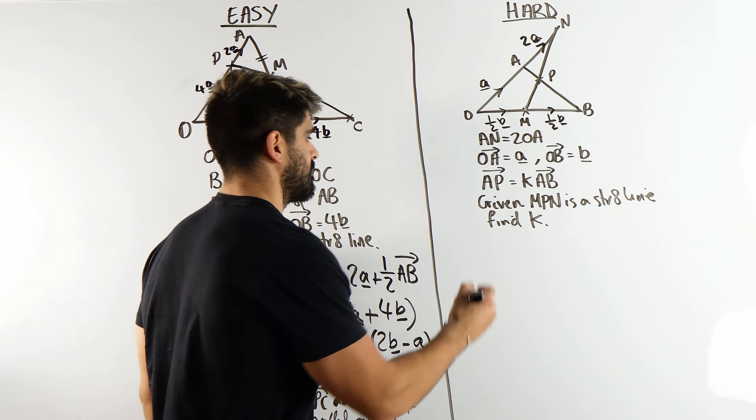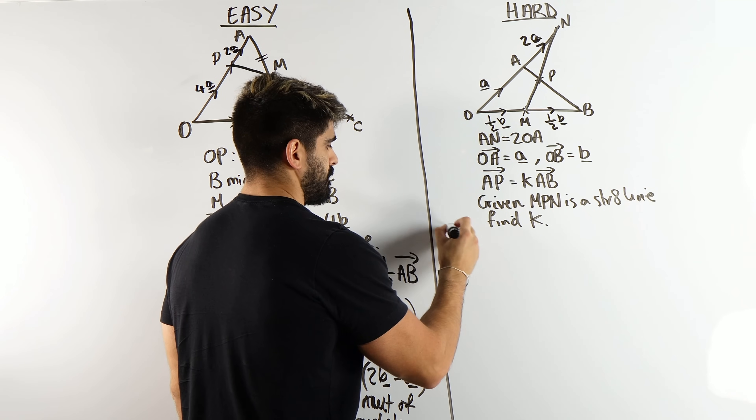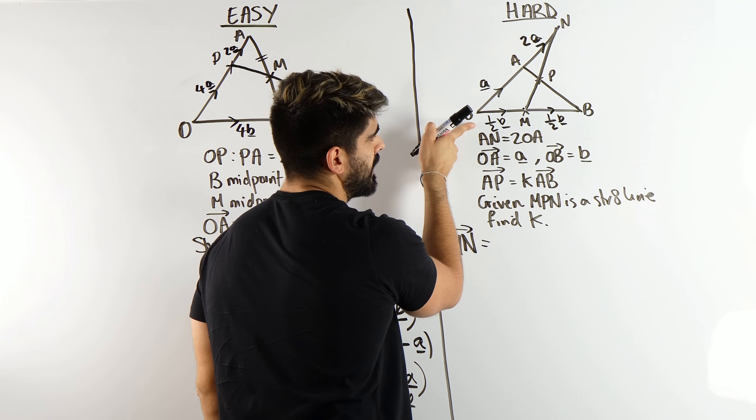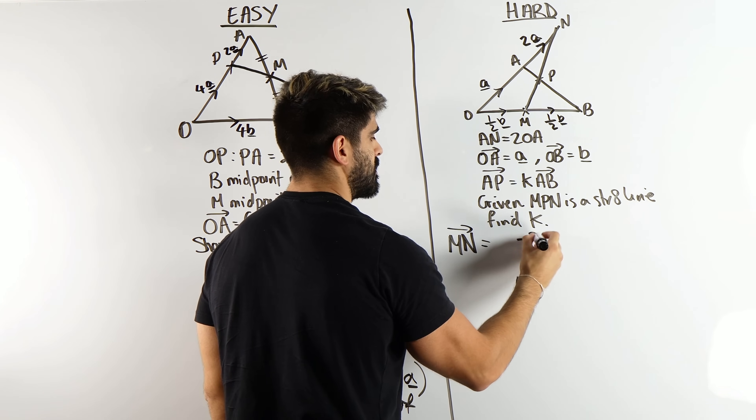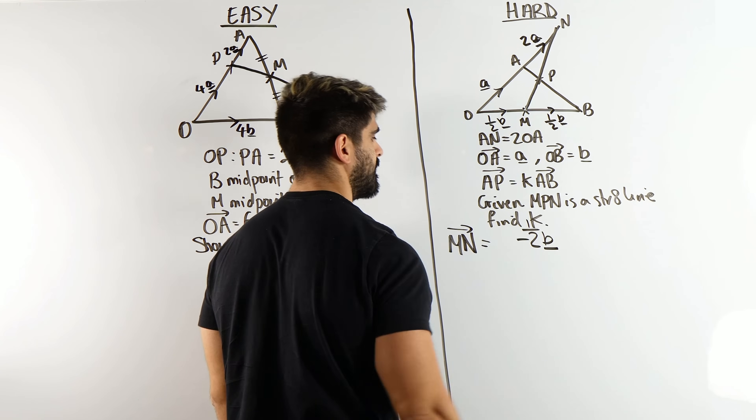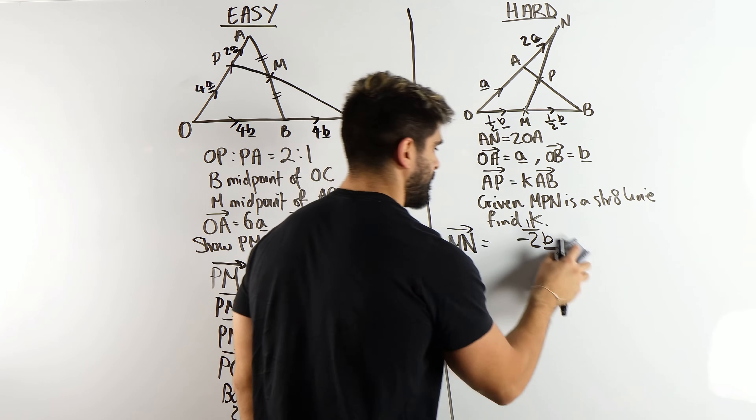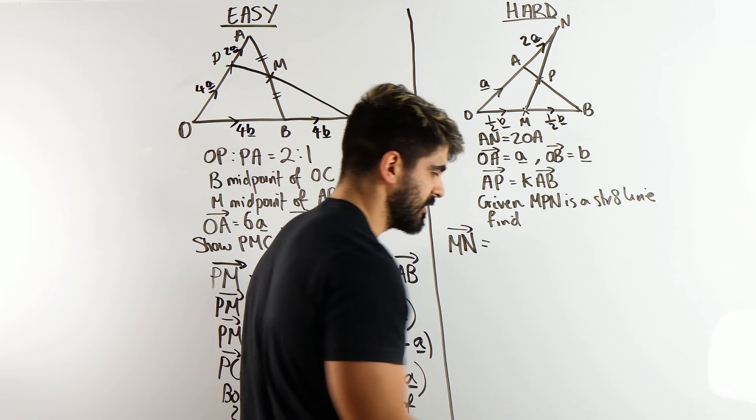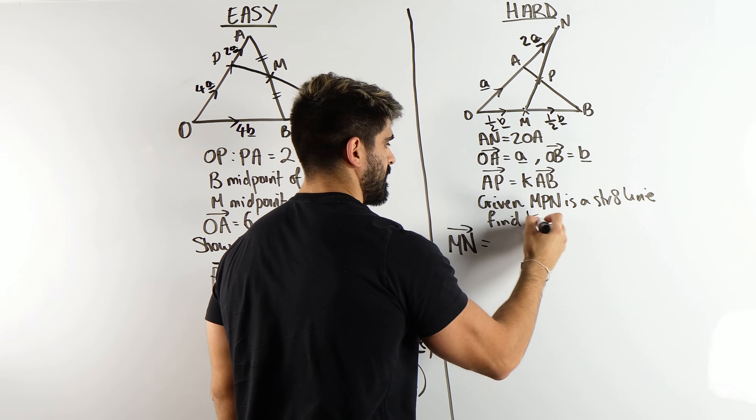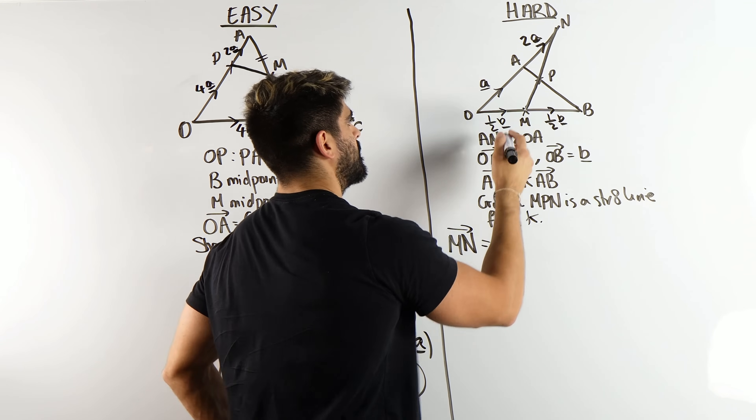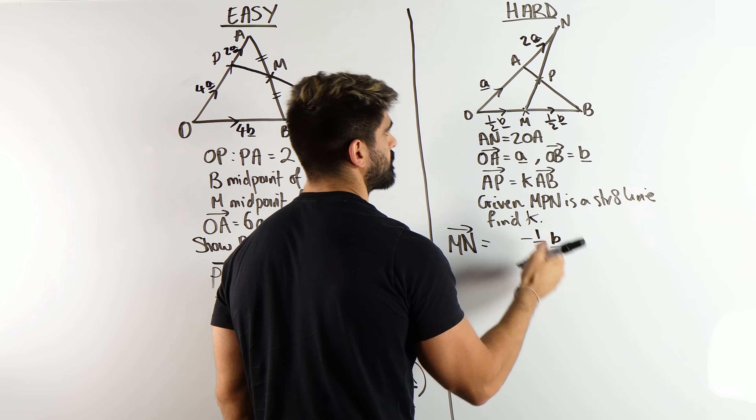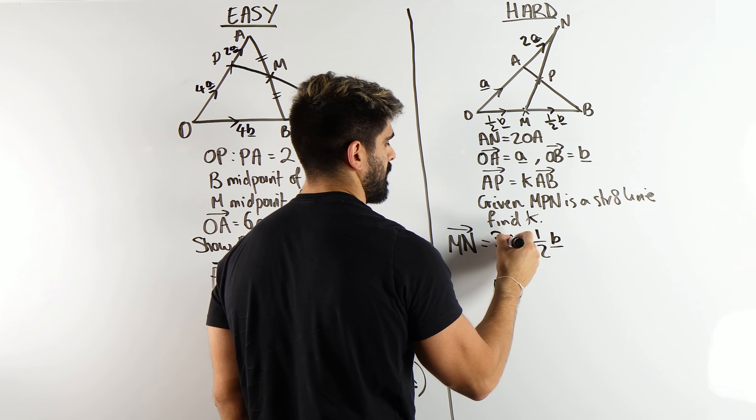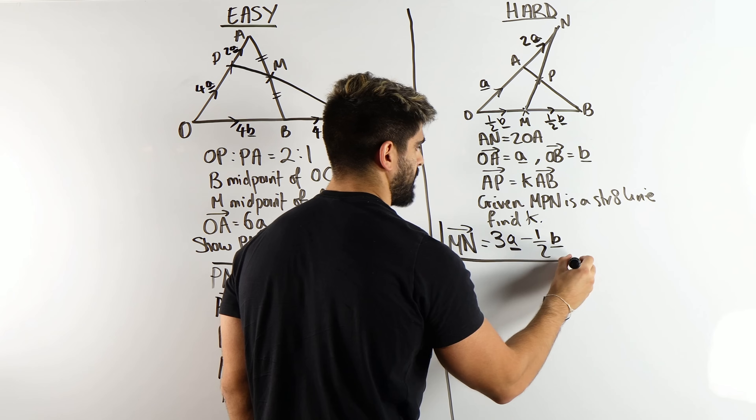So MP is parallel to MN. Now we can work out MN really easily. It's basically on the diagram. To go from M to N, I'm going to go back. That's going to be minus a half B, and then we have 3A. So minus a half B plus 3A. We'll save that for later.